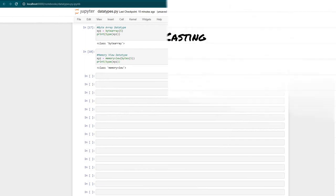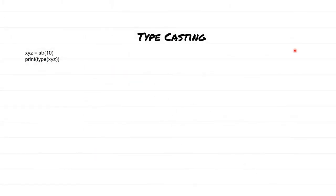In certain cases, you may need to change a data type from one type to another. This can be done easily using type casting. For example, using the str function — typing str followed by the value in brackets — casts a numeric value of 10 into a string. So instead of getting an integer output, you get a string output.